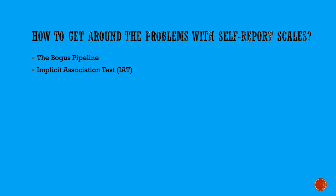The implicit association test, or IAT, is another very popular way of getting around the problem with self-report. You can also use physiological measures — for example, in some advertising research, electrodes are attached to an individual's face to measure the electrical activity in facial muscles, because different patterns of activity occur depending on whether a person is in a happy or unhappy mood. You can gauge an individual's reactions to advertisements based on the electrical activity of their face — you don't even have to ask if they like the ad. This is another way to get at attitudes without asking people directly.